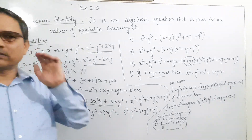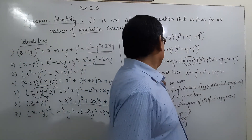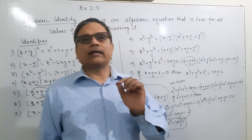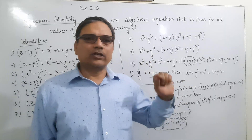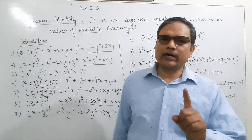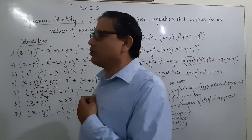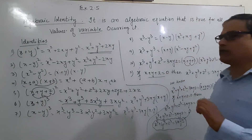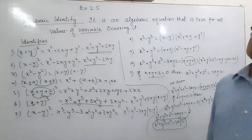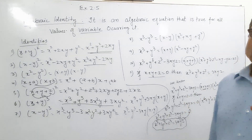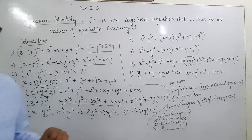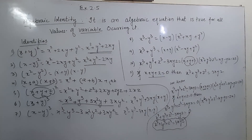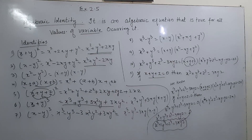If a question asks: if x + y + z = 0, prove that x³ + y³ + z³ = 3xyz, you verify it this way. This question is repeated in the exercise, so try it yourself. The entire Exercise 2.5 is based on these identities, so please learn and revise each one carefully. Thank you very much.